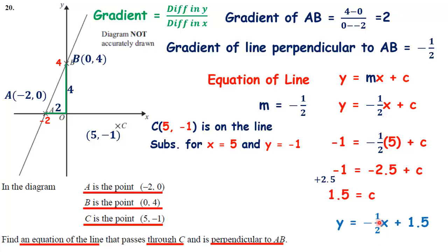My final answer: I replace c in the equation with one point five. So the final answer is y = -½x + 1.5. This question does need a bit of getting your head around — it's quite a high-level topic. Make sure you do understand it. You are able to do it.